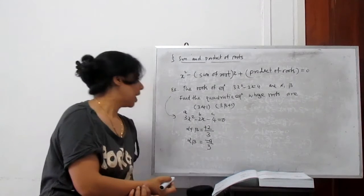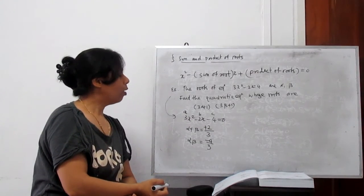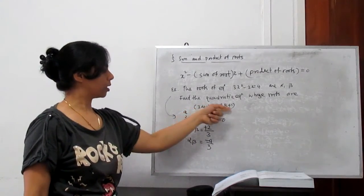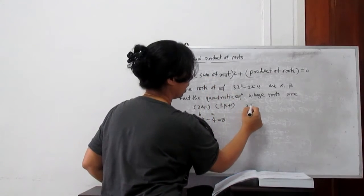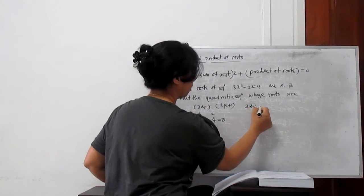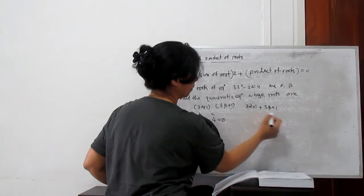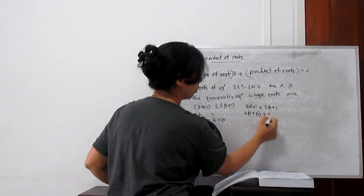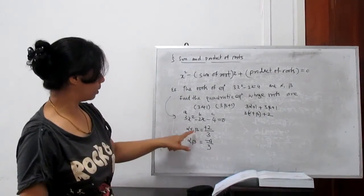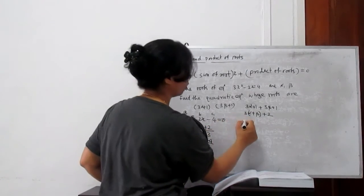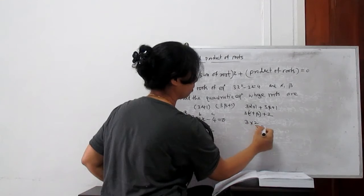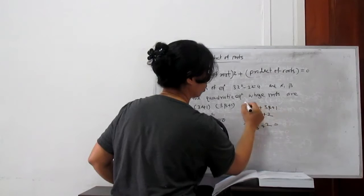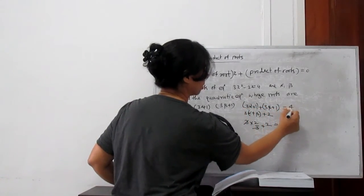Find the new quadratic equation whose roots are 3α+1 and 3β+1. Sum of new roots: (3α+1) + (3β+1) = 3(α+β) + 2. Alpha + beta = 2/3, so substituting: 3(2/3) + 2 = 2 + 2 = 4. Sum of roots for the new equation is 4.